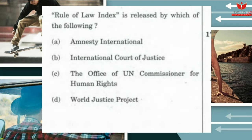A 2018 prelims question asked: 'The Rule of Law Index is released by which of the following?' Option A: Amnesty International; Option B: International Court of Justice; Option C: the Office of the UN Commissioner for Human Rights; Option D: World Justice Project. The correct answer is Option D — World Justice Project. Remember: the Freedom on Net report belongs to Freedom House — Freedom House is the organization, and Freedom on Net is the report.